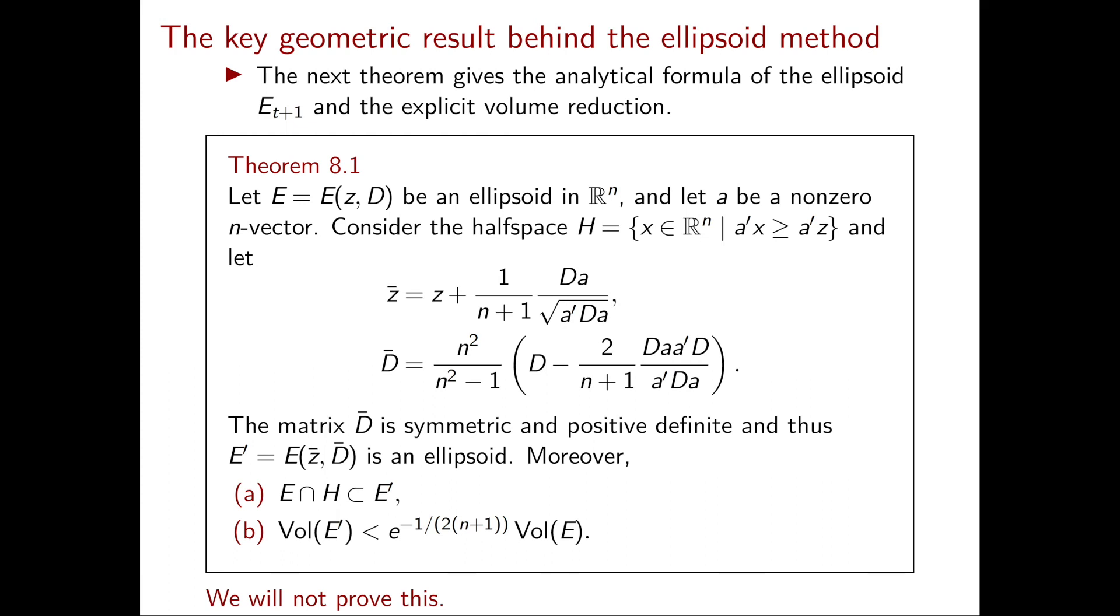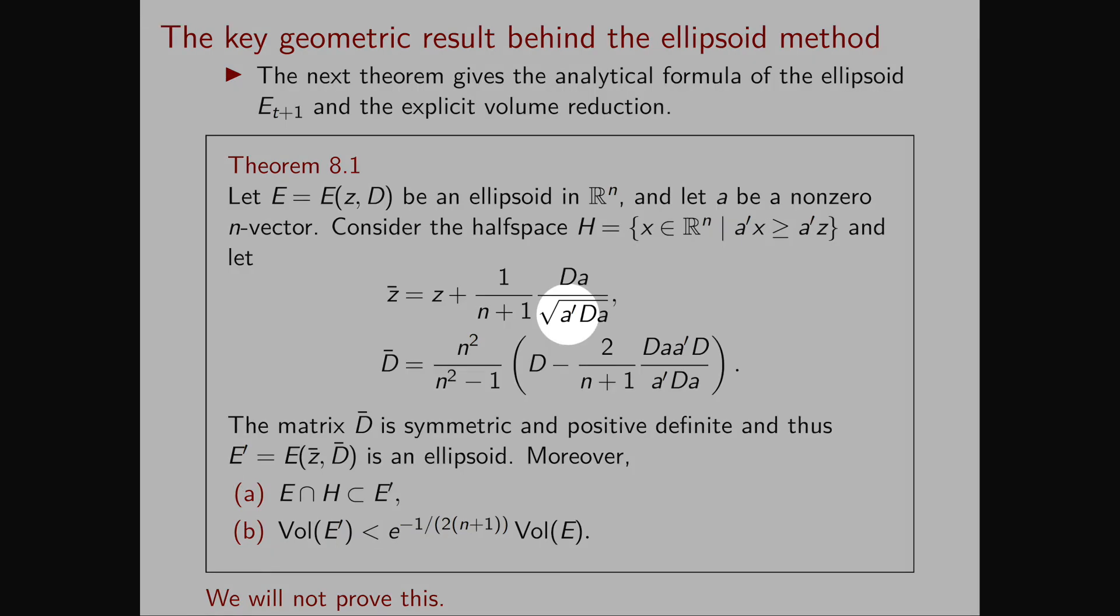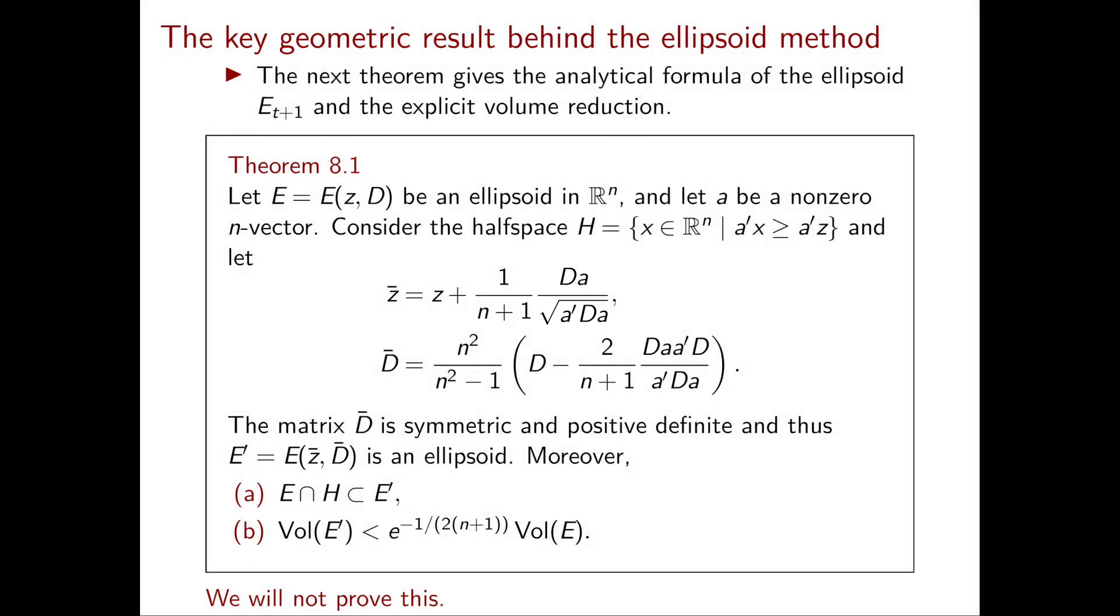Namely in computing z bar we have a square root and this means that potentially we could be dealing with irrational numbers. And this is not good because it's very important to consider the size of the vectors that we are constructing. And if a component of a vector is irrational then its size is essentially infinite. So for now forget about the square root we are going to talk about it later.